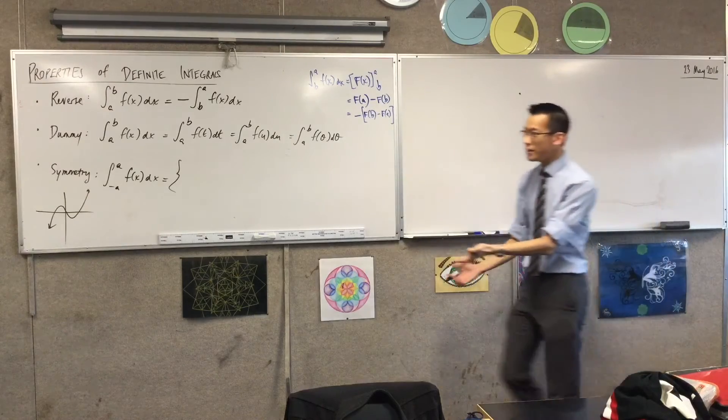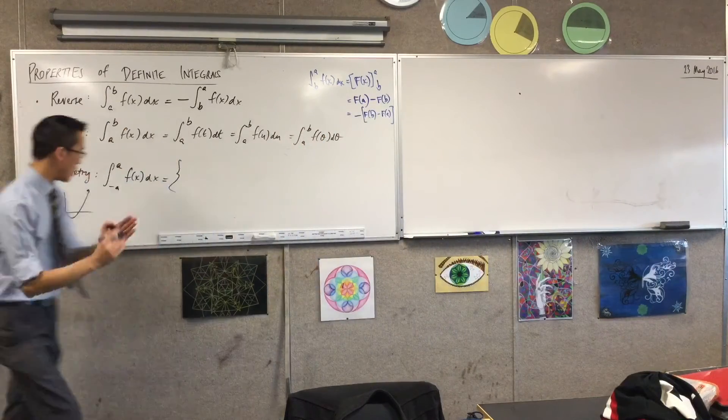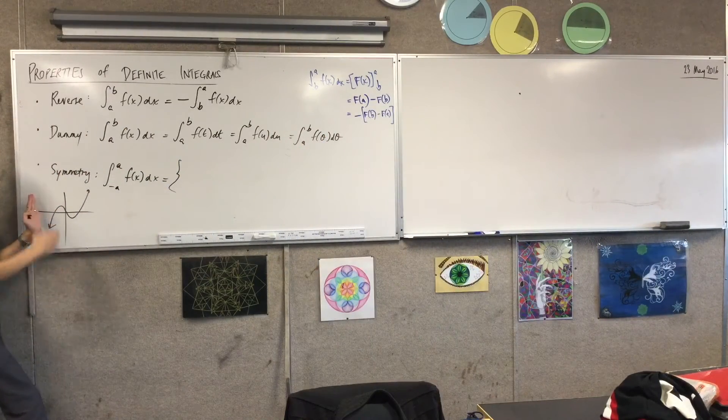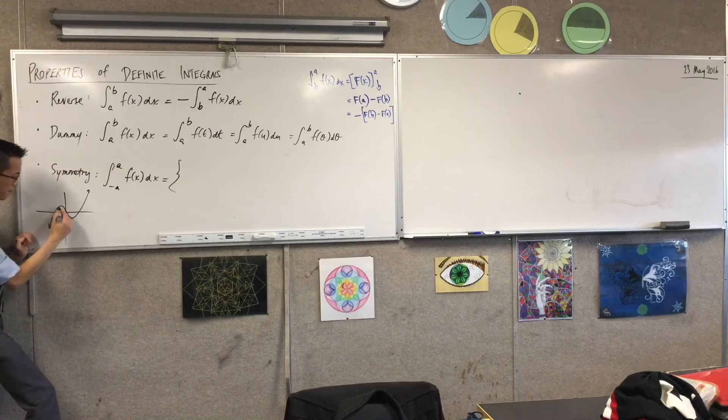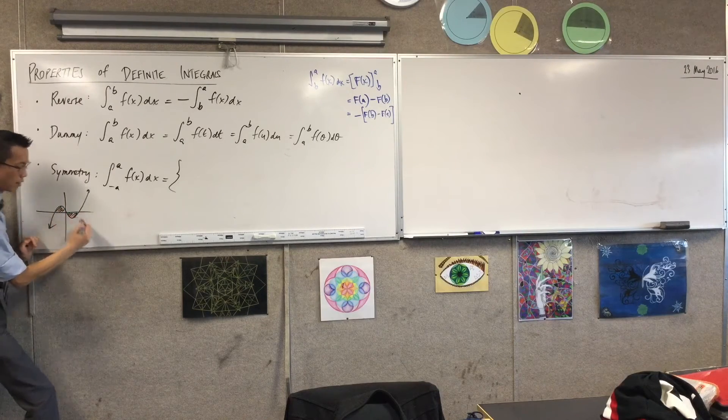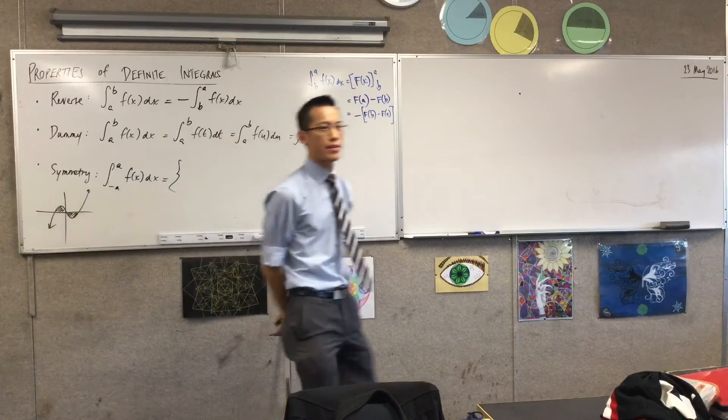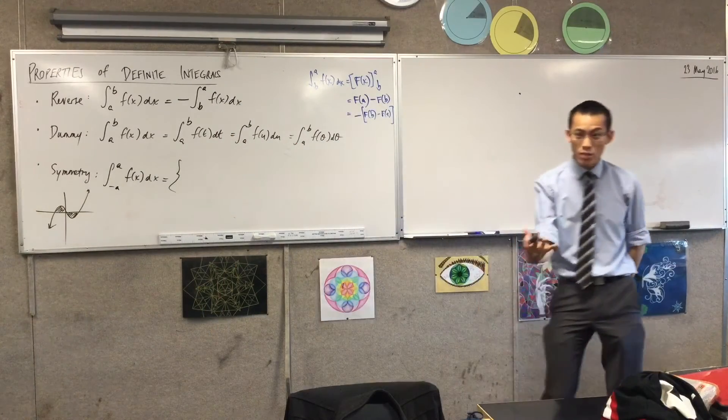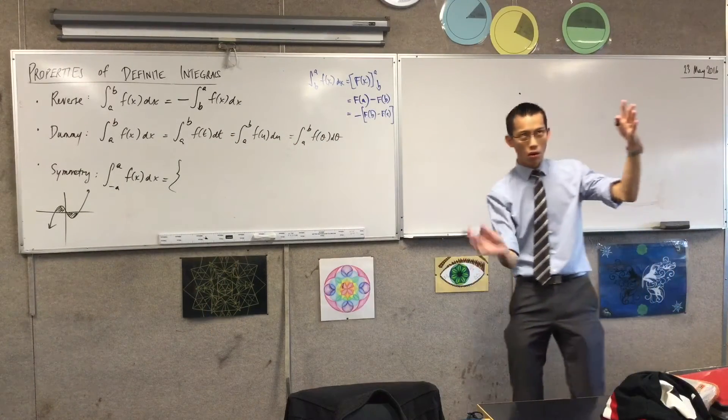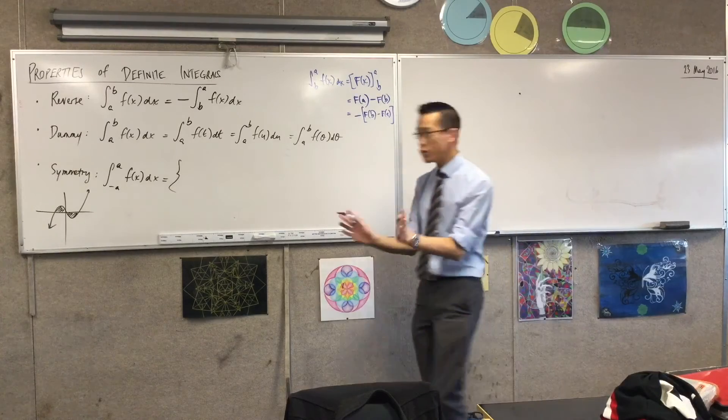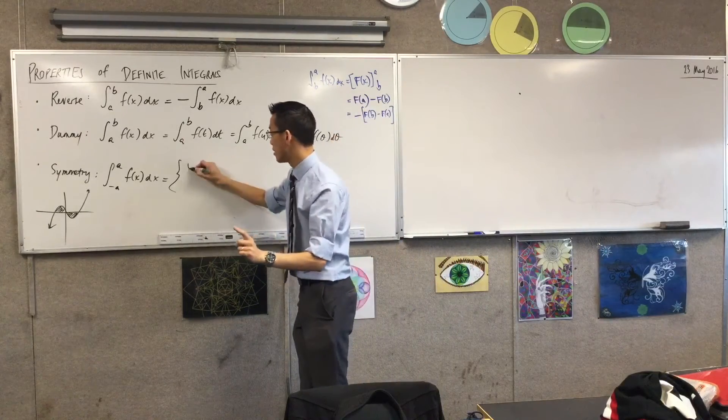Because it's odd, and you integrate from the same distance over this side to that side, for example, go from negative one to one. What's going to happen when you evaluate that integral? You just get zero because you've got a negative and a positive, or a positive and a negative, whatever you get. If it's odd, you'll get zero.